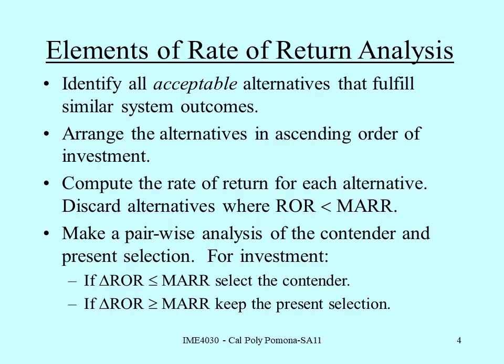Then we compute the rate of return for each alternative and discard alternatives where the rate of return is less than our minimum attractive rate of return — calling out projects that aren't viable on their own. We start with the lowest two projects in terms of first cost, pair them up, and examine the increment. If the incremental rate of return is less than the MARR, we select the lower cost alternative. If it's greater than the MARR, we go with the higher cost alternative.